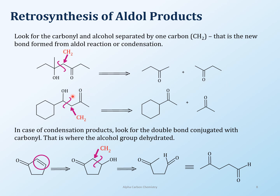Here is another example — again, focus on the carbonyl, the CH2 next to it, and the alcohol. Break that bond and you end up with two fragments. For a condensation product with a double bond, same principle: the double bond corresponds to where the alcohol would have been. The alpha carbon is where you cleave, and that's where the alcohol would have been, giving you the product fragments.